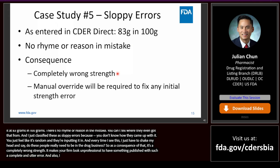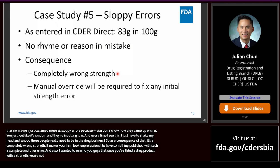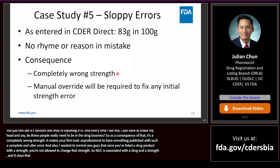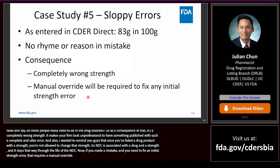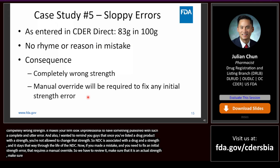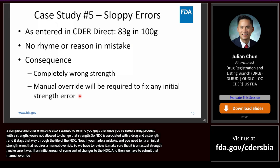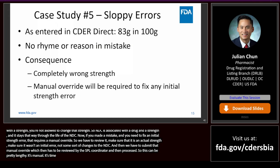Once you've listed a drug product with a strength, you are not allowed to change that strength. An NDC is associated with a drug and a strength, and it stays that way through the life of that NDC. If you made a mistake and need to fix an initial strength error, that requires a manual override. We have to review it, make sure it was an actual initial error and not a change to the NDC, then submit that manual override for review by the SPL coordinator. This process can be lengthy and time-consuming, so making sure you enter the correct strength the first time is extremely important.